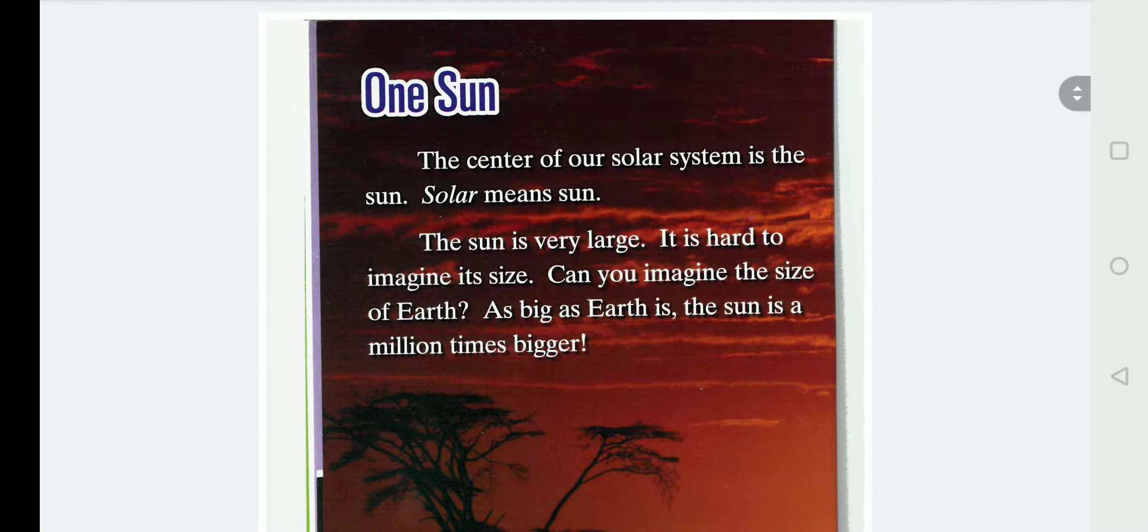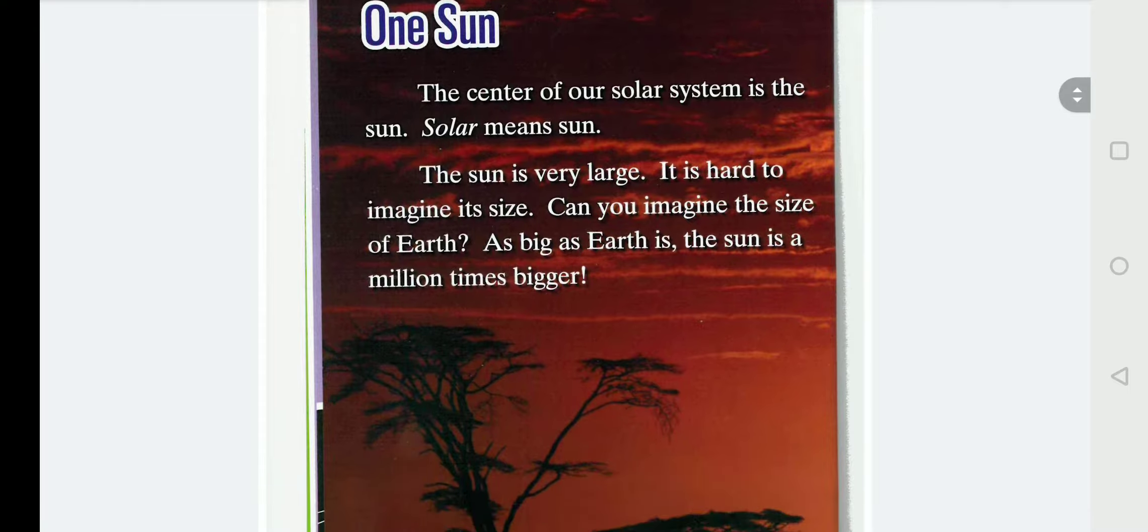One sun. The centre of our solar system is the sun. Solar means sun. The sun is very large. It is hard to imagine its size. Can you imagine the size of Earth? As big as Earth is, the sun is a million times bigger.